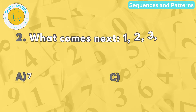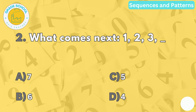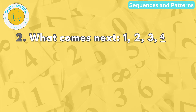Question number two. What comes next? One, two, three, blank. The correct answer is letter D. Four. The sequence adds one more to each number in order.